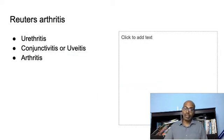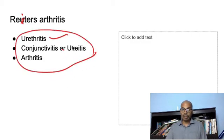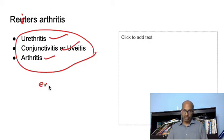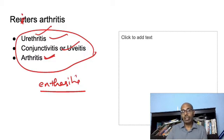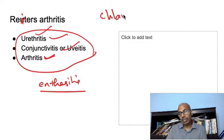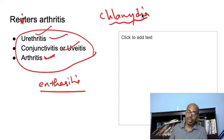Reiter's arthritis is a triad of three things: urethritis, conjunctivitis or uveitis, and arthritis — a systemic generalized arthritis. You can also have enthesitis like plantar fasciitis and achilles tendonitis. If a clinical vignette gives you these three features, you must select Reiter's or reactive arthritis. It is hypothesized to be caused by chlamydia infection. The use of antibiotics like doxycycline or tetracycline is controversial, but disease modifying drugs are also used.